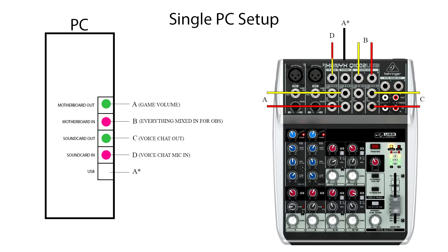Motherboard out — I've labeled this A — this is my game volume, and I have this connected to channels 5/6 on my mixer. The reason I use 5/6 is just personal preference — it's at the bottom and easier to reach. This is how I control game volume. The output from your computer to the mixer is normally what you would plug your headphones into if you just had a headset. Next, motherboard in — this is my input, this is what OBS hears. This goes into my computer like a microphone input, but it's everything mixed together: game volume, voice chat, etc.